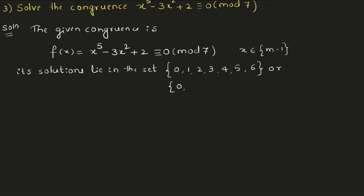Or you may write it as 0, 1, 2, 3. For 4, 5, 6, you can write minus 3, minus 2, minus 1 — that is 7 minus 3 = 4, 7 minus 5 = 2, 7 minus 6 = 1. So the set is 0, ±1, ±2, ±3. Go on substituting these values in your polynomial equation to check whether you will get a solution or not.